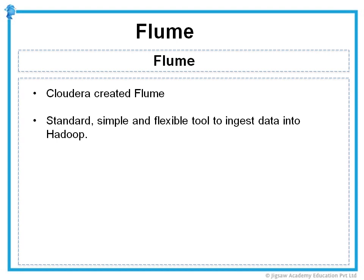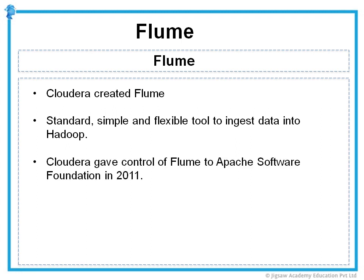A couple of other technologies similar to Flume are Facebook's Scribe and Apache or LinkedIn's Kafka. Both offer solutions to the same problem. But Flume is rapidly becoming a de facto standard for directing data streams into Hadoop. Cloudera moved control of the Flume project to the Apache Software Foundation in 2011, and it is now part of the Hadoop ecosystem.